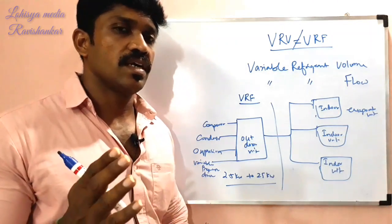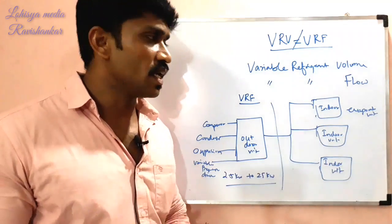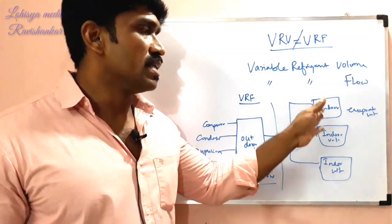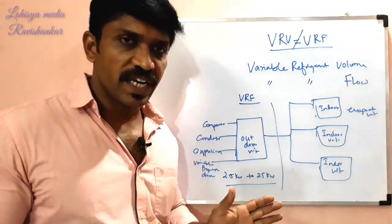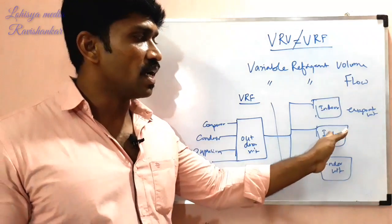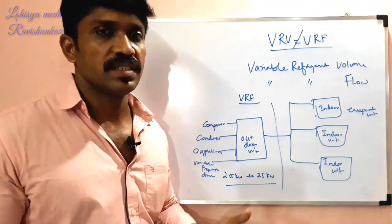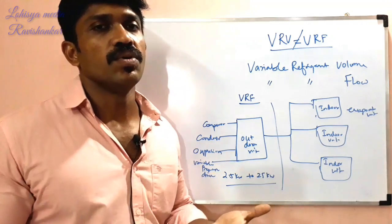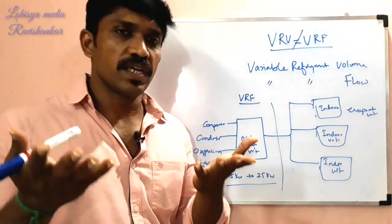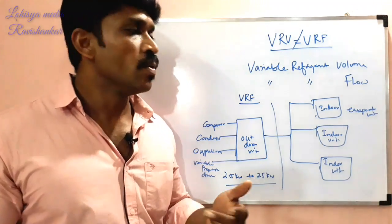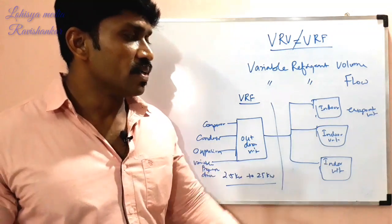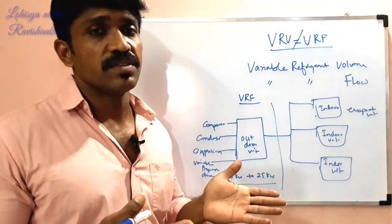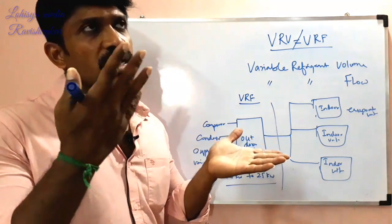The outdoor unit connects to the indoor units. In the indoor unit, you can use cassette-type AC with 4-directional airflow. You can also fix wall ceiling units, and multiple types of indoor units can be used in the same VRF system.